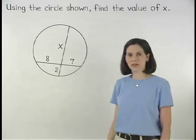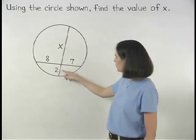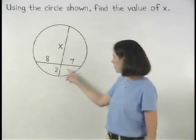In other words, we can set up the equation 2 times x equals 8 times 7.